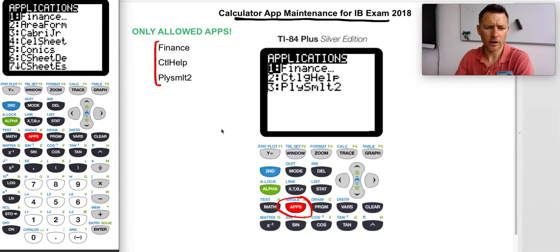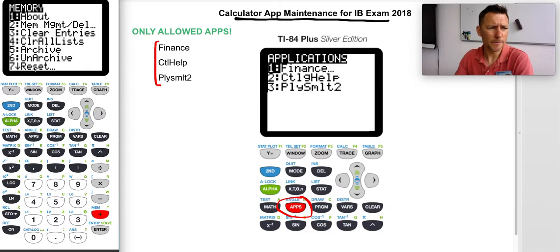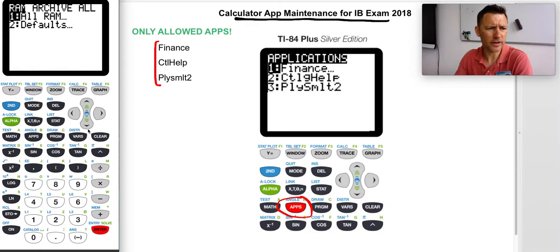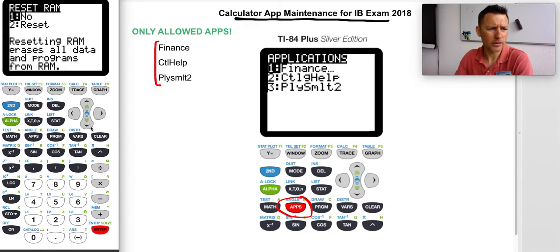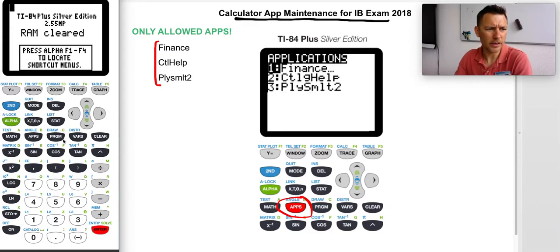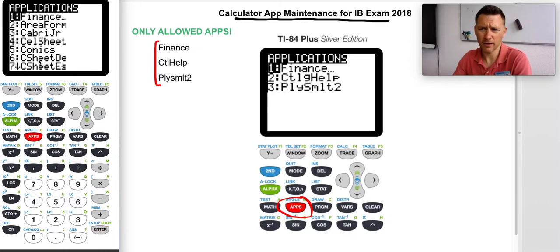Also, if you end up resetting your memory like this in second memory, say reset, yes, all ram, yes, reset, it doesn't change your apps. It doesn't delete anything, right? So that's not going to do it. You have to go through and delete each one. It's a pain.